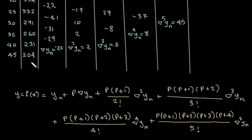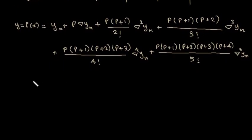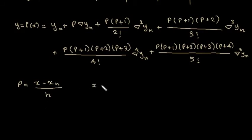So, substituting the values. 204 is yₙ. This is yₙ, this is ∇yₙ, ∇²yₙ, ∇³yₙ, ∇⁴yₙ, and ∇⁵yₙ. And we have to find out p. So p equal to (x - xₙ) divided by h. Here xₙ and the difference h is 5.